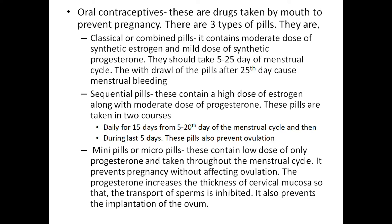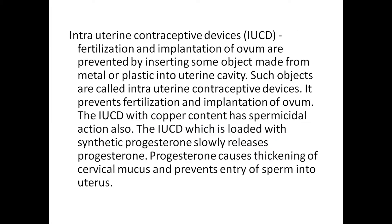Mini pills or micro pills contain a low dose of progestogen and are taken throughout the menstrual cycle. They prevent pregnancy without affecting ovulation. The progestogen increases the thickness of cervical mucosa so that sperm transport is inhibited.